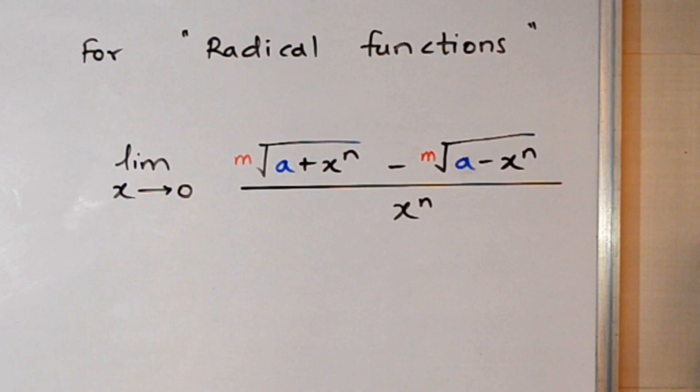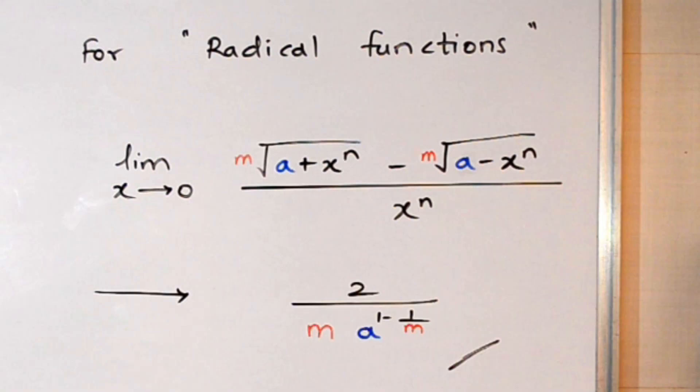The trick says, whenever we are dealing with limits of radical functions, the shortcut to get the answer is 2 upon m into a raised to 1 minus 1 by m. The small m is nothing but the root power, and the small a is the constant inside the bracket. This formula is short and sweet. Just note it, and we will solve the examples using this shortcut.